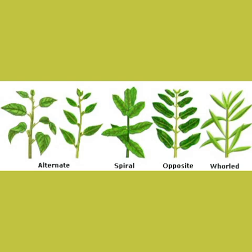The third type is whorled arrangement, where three or more leaves grow from the same node. So to summarize: in alternate, one leaf per node in a spiral pattern; in opposite, two leaves per node growing in opposite directions; in whorled, three or more leaves per node. That's enough for today. Thank you.